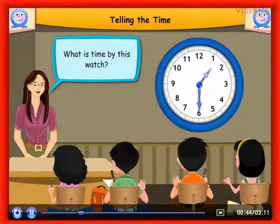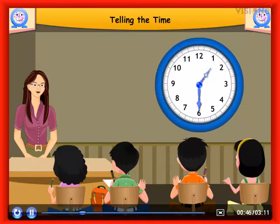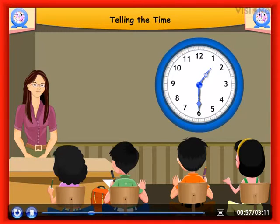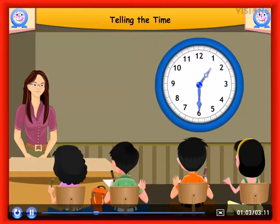What is the time by this watch? In this clock, the hour hand is halfway between 1 and 2. The minute hand is at 6. The time is 1.30. We also say that it is 30 minutes after 1, or half past 1.